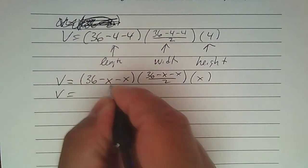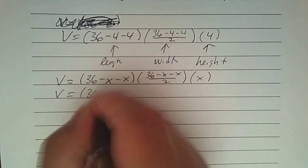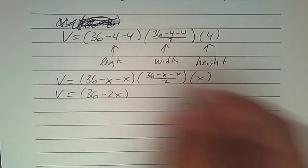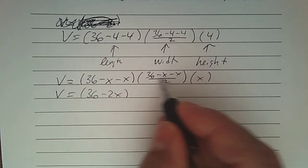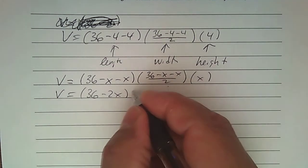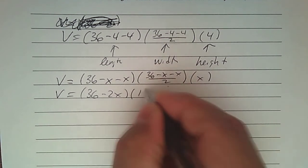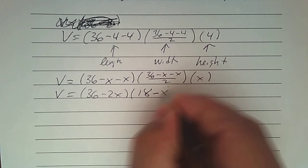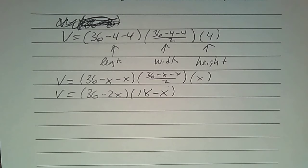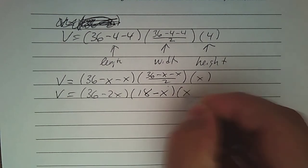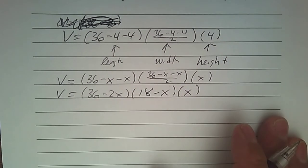If I simplify the first one, that's 36 take away 2x. Here, you have 36 subtract 2x, but you're dividing by 2. I can simplify that as well. 36 divided by 2 is 18, and 2x divided by 2 just leaves me with 1x. So you have 18 subtract x. And then x by itself is perfect.